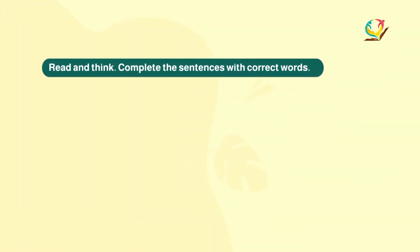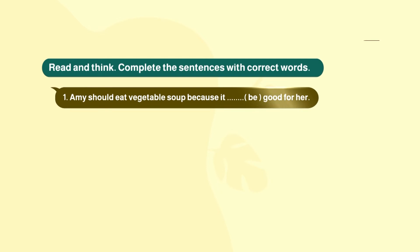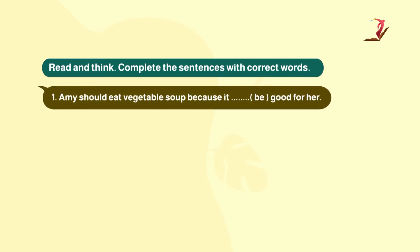Let's go to exercise number one. Complete the sentences with the correct words. The verb in brackets will need to be corrected and written in the appropriate form. Number one: Amy should eat vegetable soup because it ___ good for hair. What's the correct verb for 'be'? It is 'is' — because 'it is good for hair.'